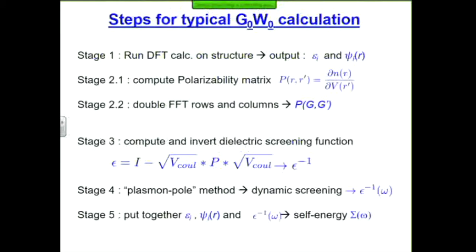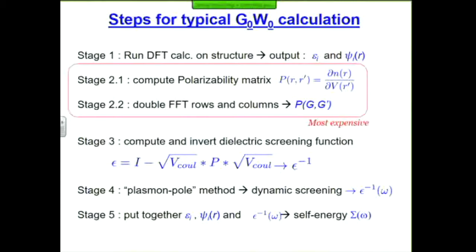A typical step in a G0W0 calculation works like this. First, run density functional theory to get energies and wave functions. Then compute the P matrix. Then FFT the rows and columns of P — basically change from R-space to G-space, or Fourier/momentum vectors. Then do in-place multiplications to get a matrix of the same size as P called epsilon. Invert that — a large inversion. Once you have that, you can give electrons dynamic screening using the plasmon pole recipe. Then you combine your DFT energy eigenvalues, your wave functions, and epsilon-inverse to form sigma. The most expensive part is the calculation of P.